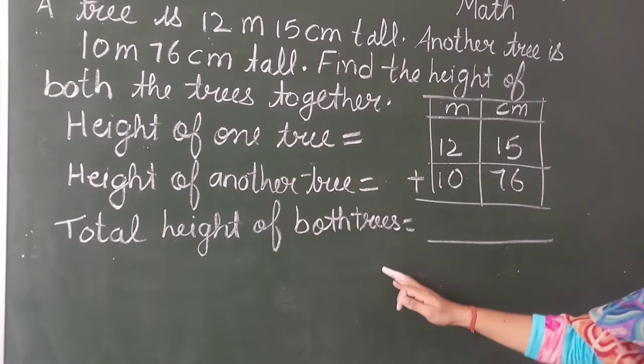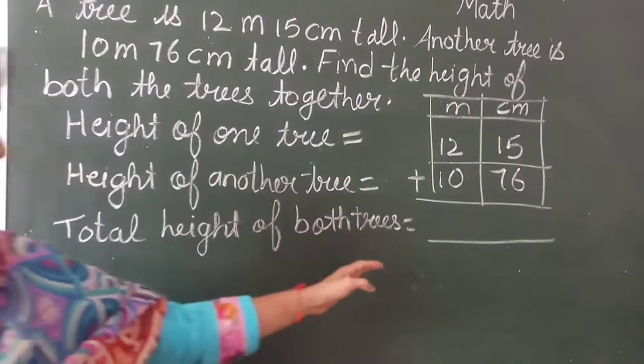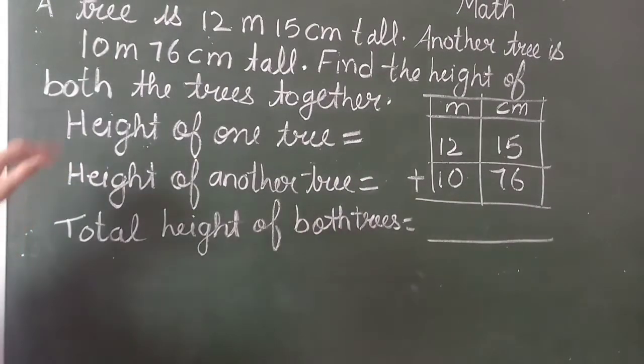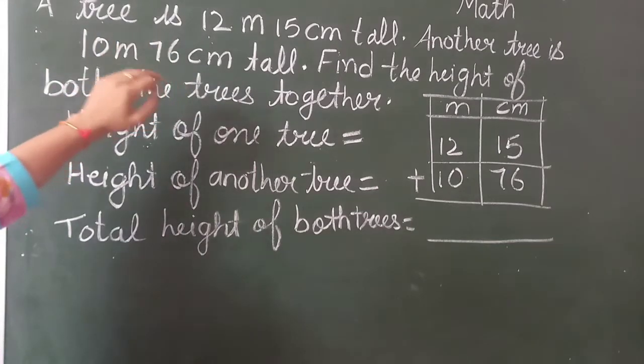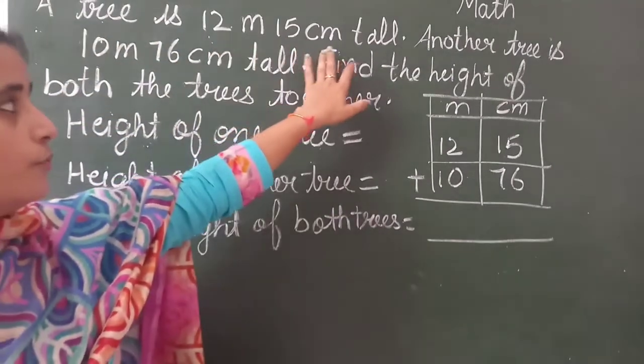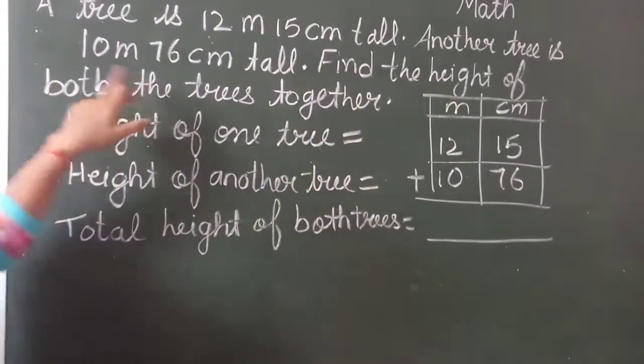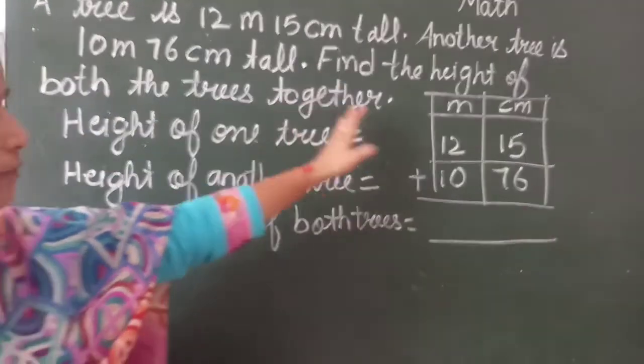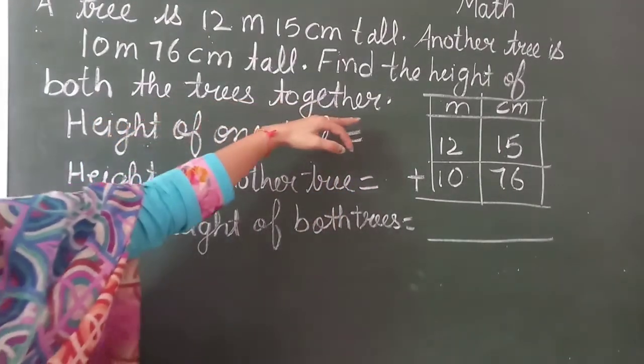We will do practice with one more example. One more sum we will do. The last sum that was of subtraction but now the sum is of addition. So first of all we will read the statement carefully. So the statement is a tree is 12 meter and 15 centimeter tall and another tree that is 10 meter and 76 centimeter tall. So now what we have to find? We have to find out the height of both trees together.